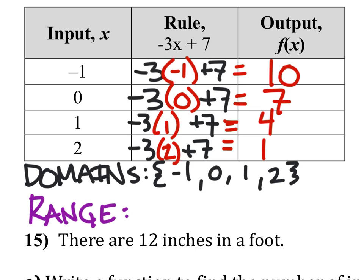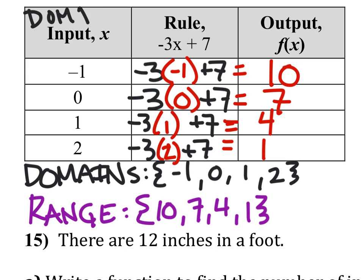Next, let's do the range. There's our range. The outputs is the range. Domain is inputs, range is outputs. Let's list those numbers. So we've got a range 10, 7, 4, 1. Once again, the inputs are the domain, and the outputs are the range.